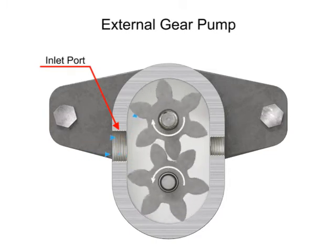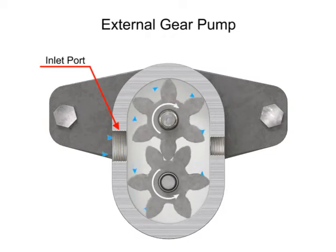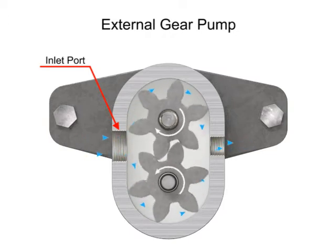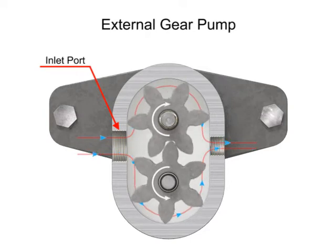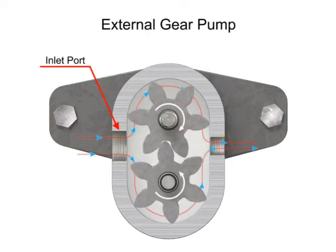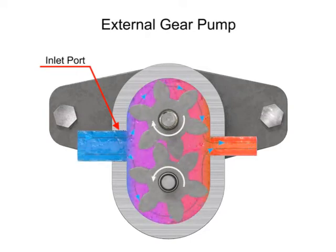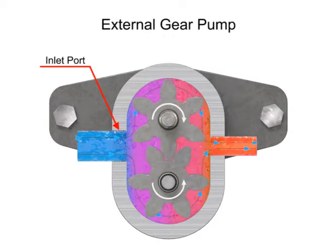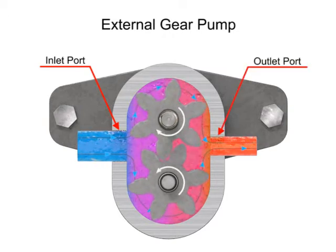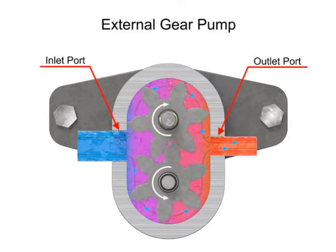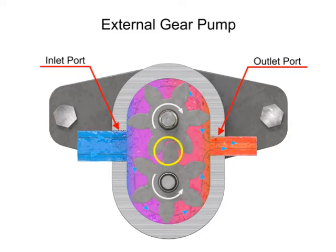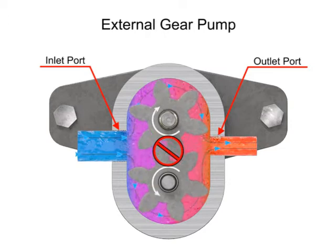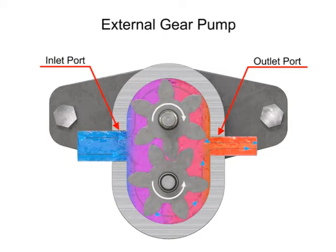Fluid flows into the cavities and is trapped by the gear teeth. As the gears rotate, a flow path is created around the outside of each one. Fluid trapped in the slots between teeth is carried around and discharged into the cavity with the outlet port. Meshing of the teeth in the center of the pump seals the outlet port from the inlet port, and no fluid passes between the gears.